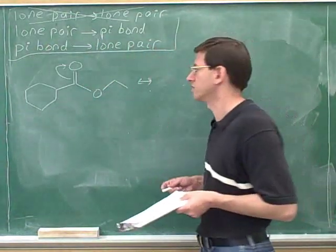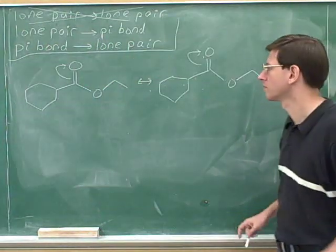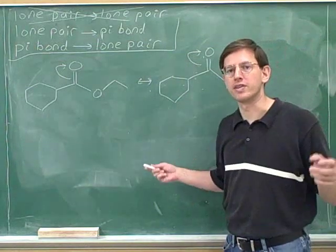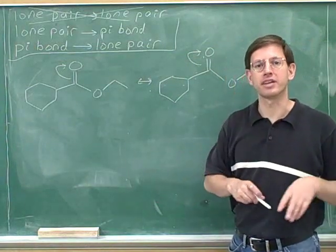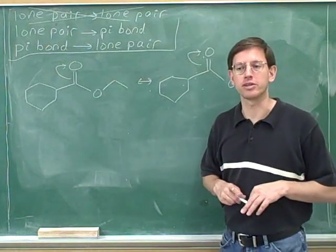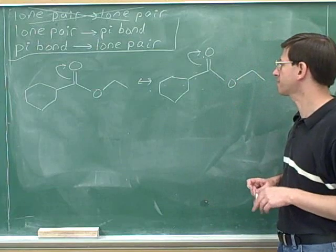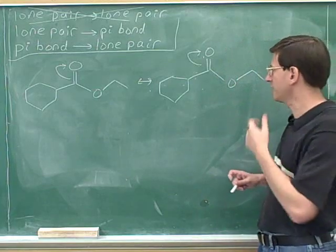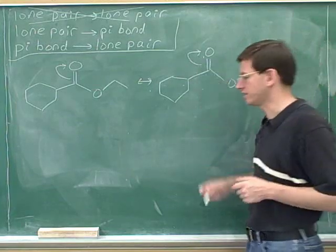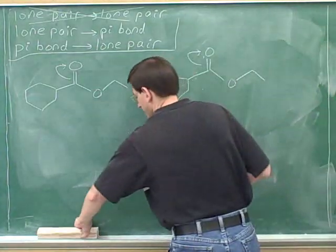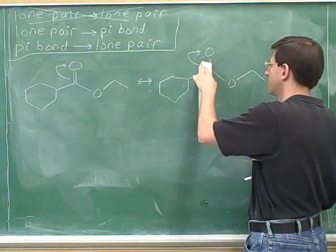Start by redrawing the original picture. Where are the electrons coming from? Where are the electrons going to? The tail of this arrow is on the pi bond, so the electrons are coming from the pi bond, so we erase the pi bond.